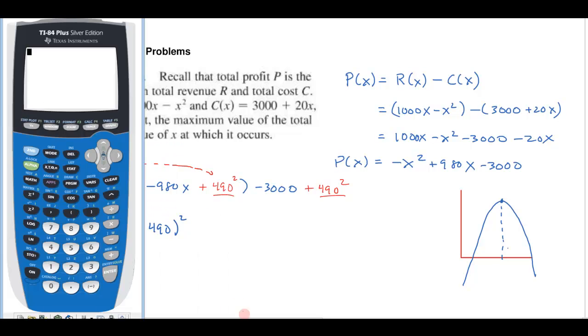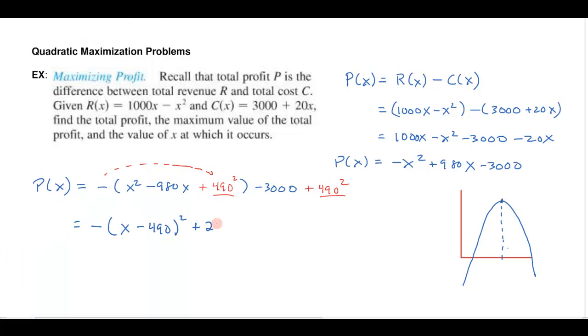And then this over here, well let's do that on our calculator. I'd get 490² - 3000, which is 237,100.